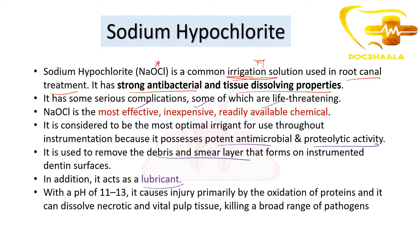In addition, it also acts as a lubricant. It is antibacterial, it has tissue dissolving property, proteolytic activity, it removes debris and smear layer of dentin, and along with that it also acts as a lubricant. With a pH of 11 to 13, it causes injury primarily by oxidation of proteins and it can dissolve necrotic and vital pulp tissue, killing a broad range of pathogens. So this is a brief about sodium hypochlorite, which will be useful from the view of dental materials.